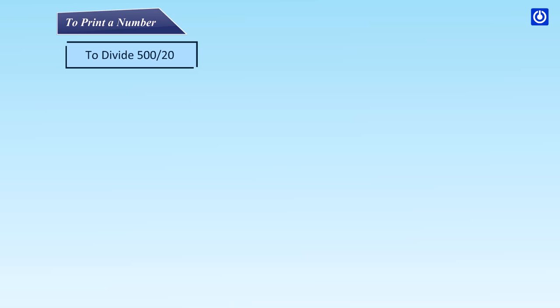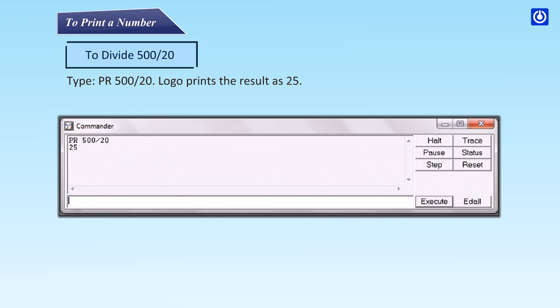To divide 500 by 20, type PR 500 / 20. Logo prints the result as 25.